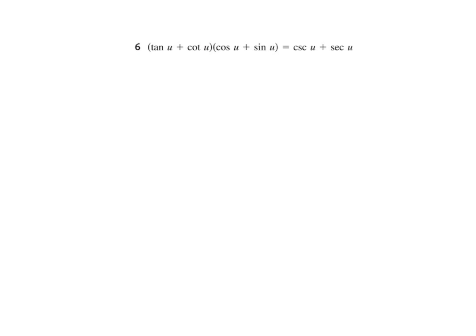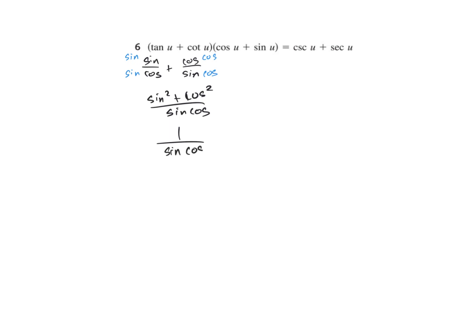Now we have tangent plus cotangent times cosine plus sine, supposed to equal cosecant plus secant. It might be easier to write sine over cosine plus cosine over sine, then put those together by multiplying by opposite denominators. We get sine squared plus cosine squared all over sine cosine, which equals 1 over sine cosine. That splits into 1 over sine times 1 over cosine, giving cosecant and secant.